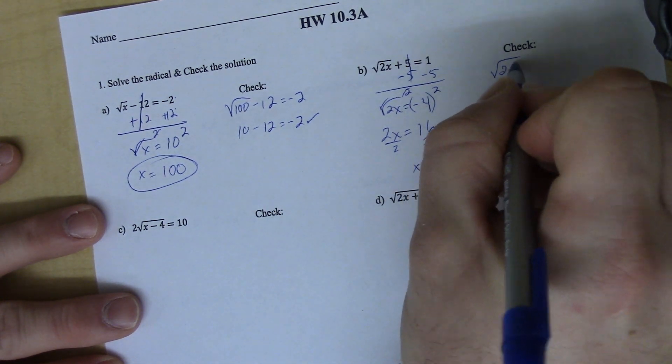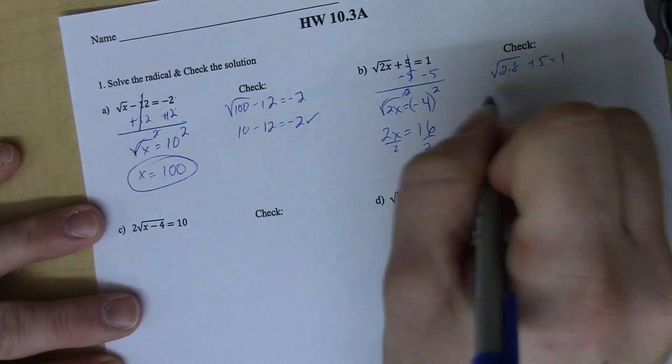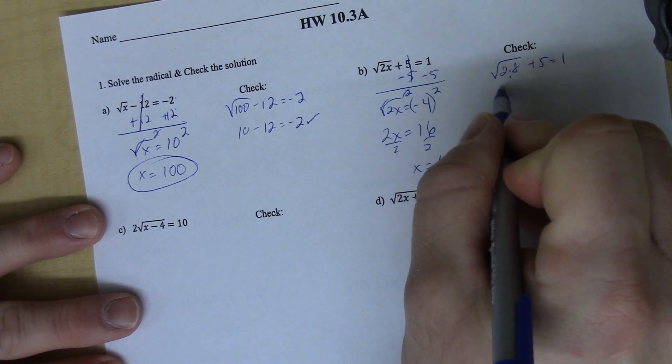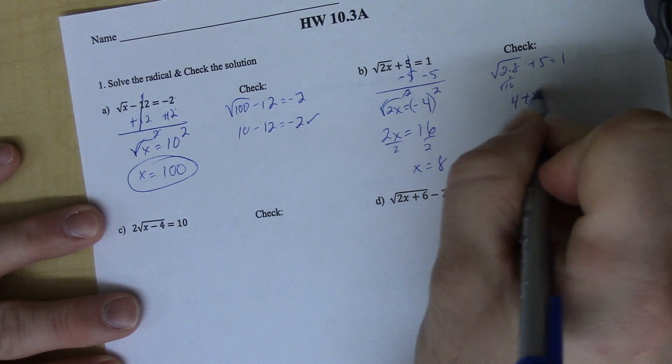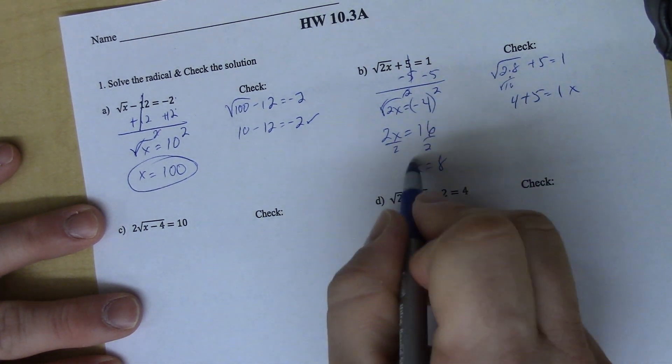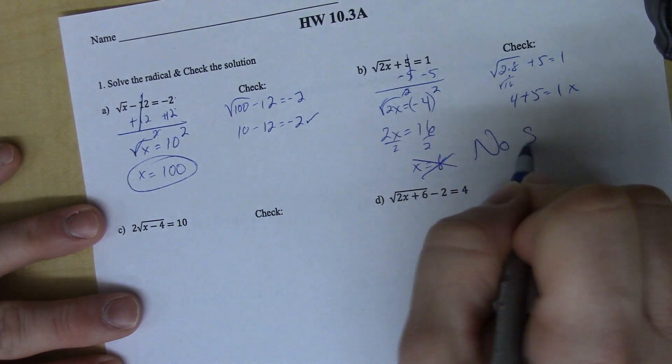I'm going to go back to check that. 2 times 8 plus 5 equals 1. This is 16, and the square root of 16 is 4 plus 5 equals 1. That does not check. There is no solution here.